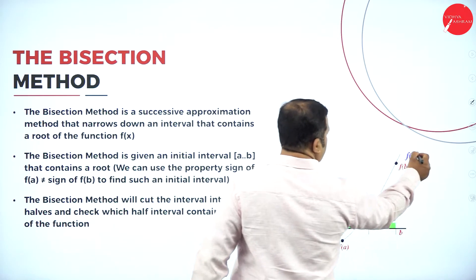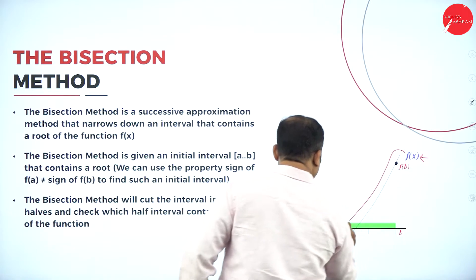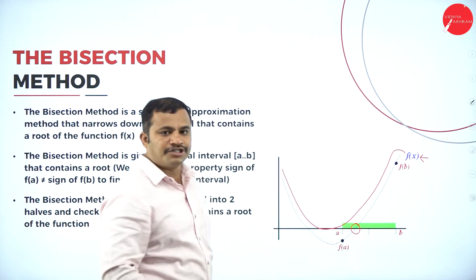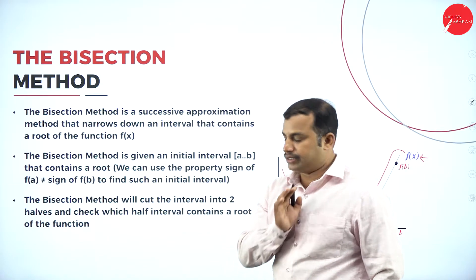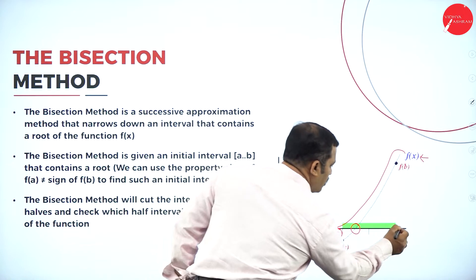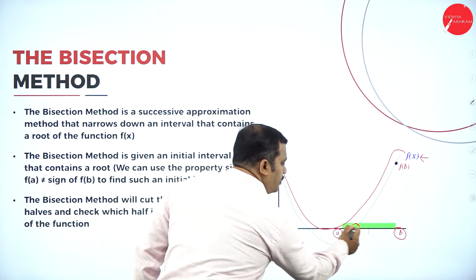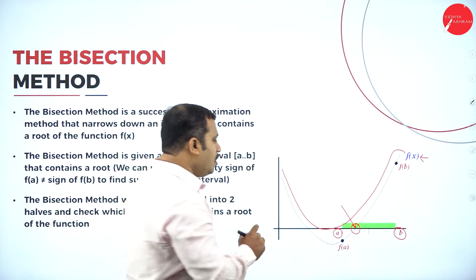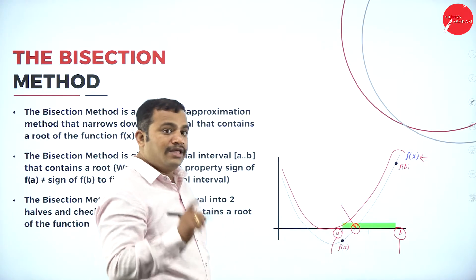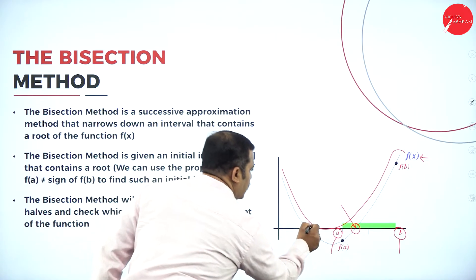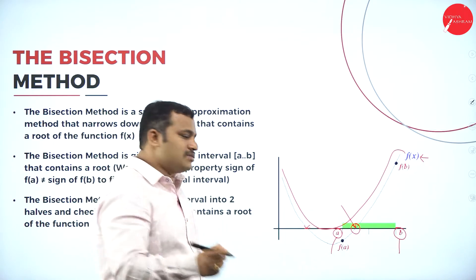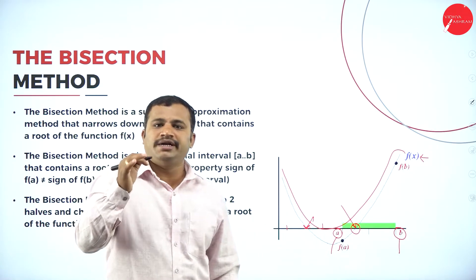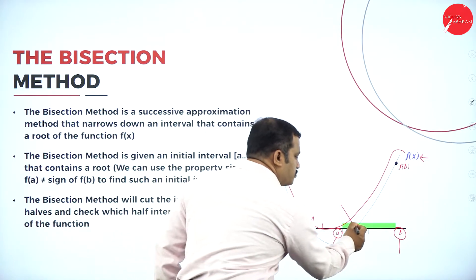This function f(x) defines the curve. We are going to find the roots of this equation, which lies at the point of juncture, by applying the bisection method. Initially, what values of A and B are considered? One root lies at the point of juncture between the interval A and B. There is also one more root lying on this curve at another point of juncture.